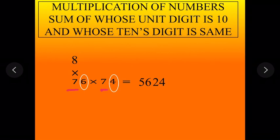Let's do one more question. 43 multiply by 47. This is also same type of question. Here sum of unit digits is 10 and tens digit is same. So we can apply this method here.